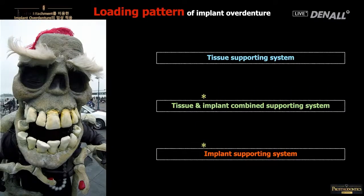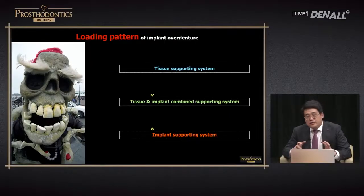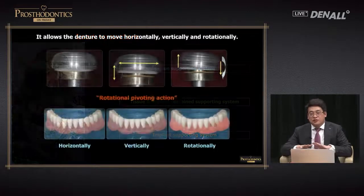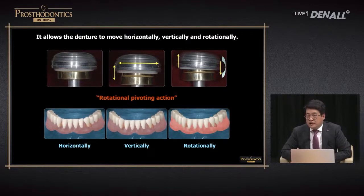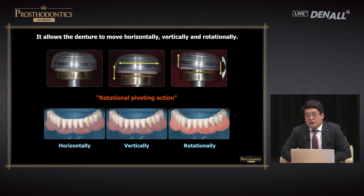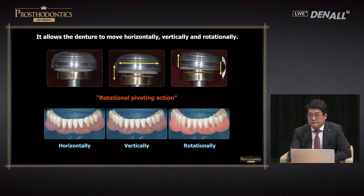In the case of a tissue-supported system, when functioning within the mouth, the attachment needs to be able to move — vertical, horizontal, and rotational movement should be allowed. In the case of the locator, it allows for all those movements and therefore should be used for tissue-supported systems. When you place two implants, the masticatory force is borne by the tissue.